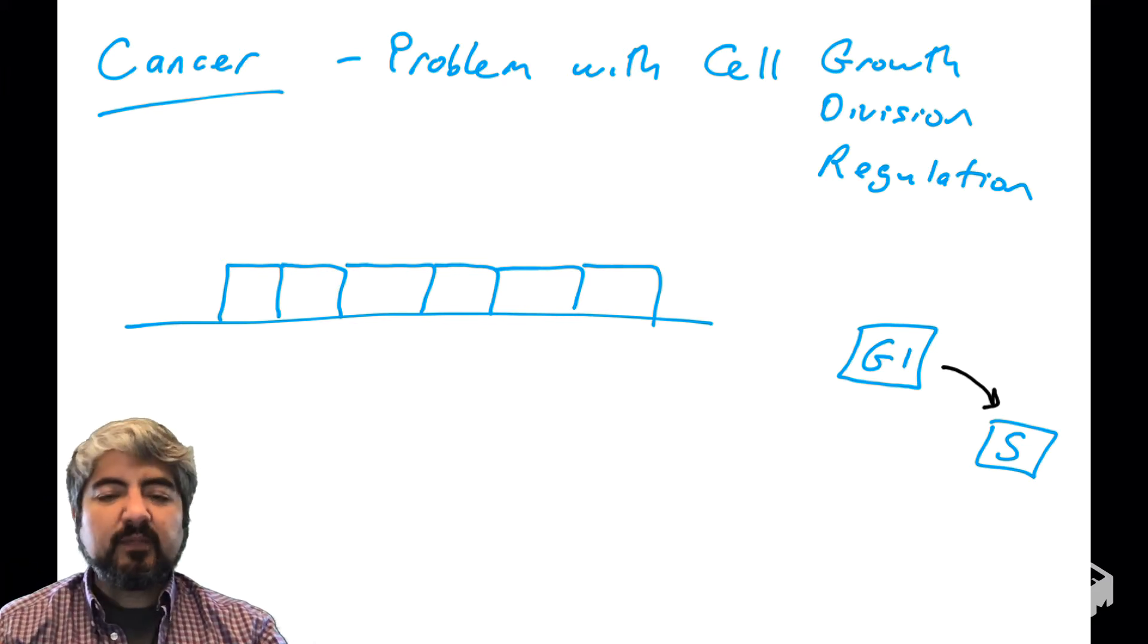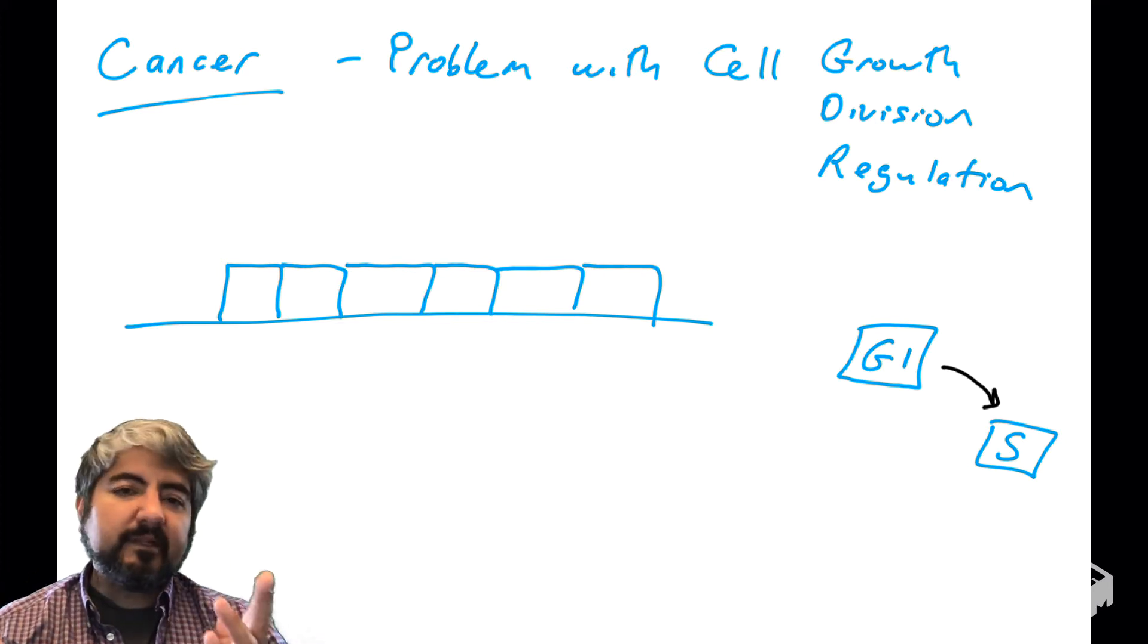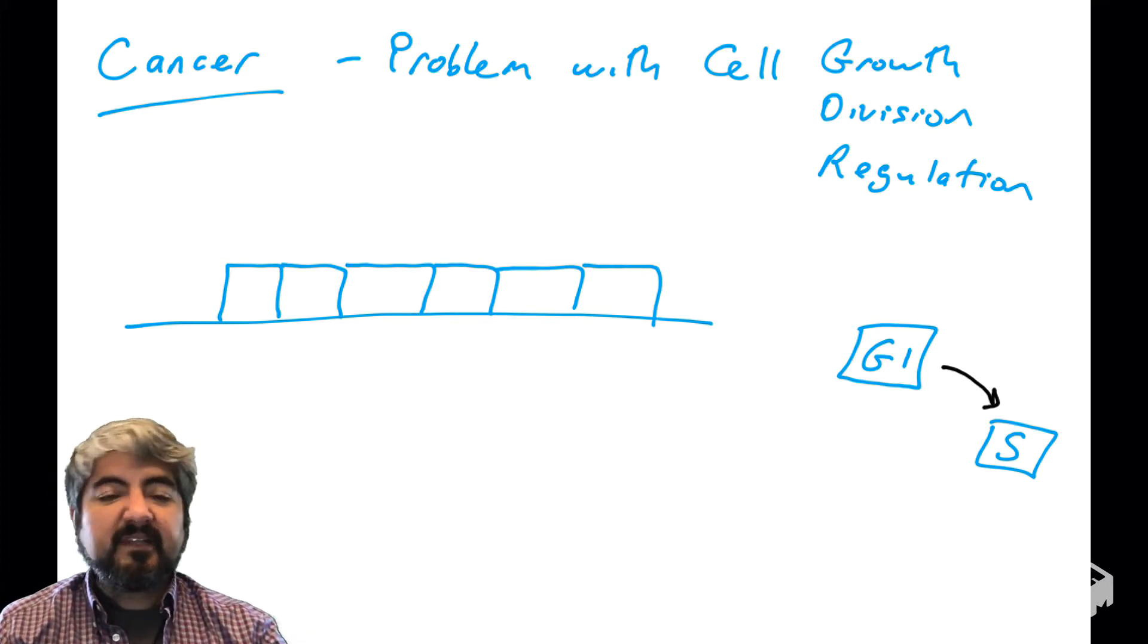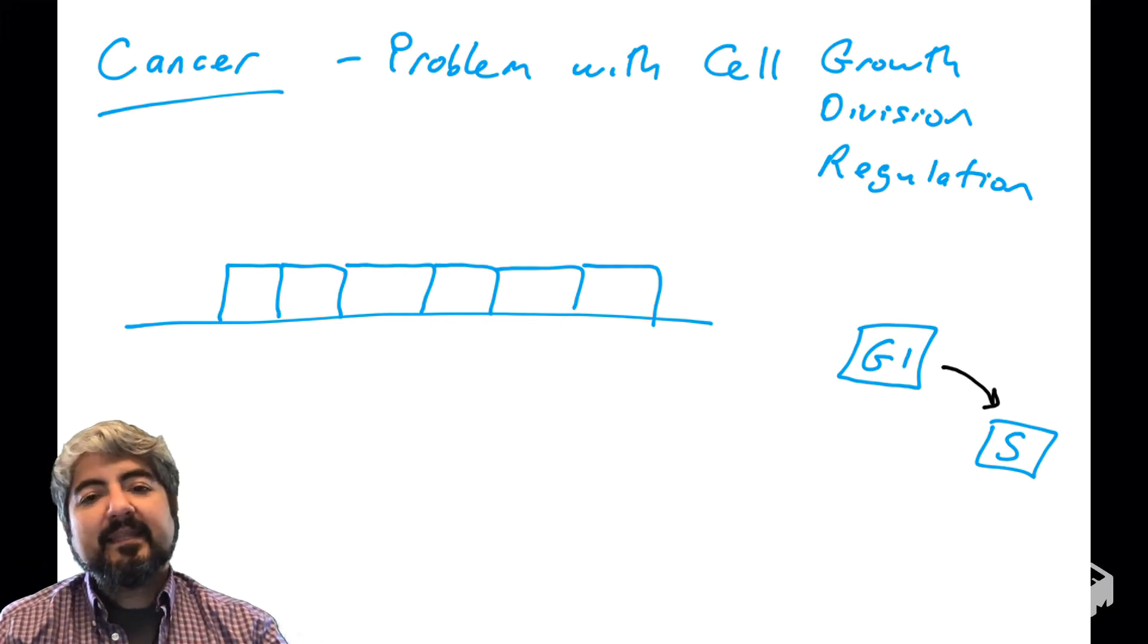So what are the phases of the cell cycle? We have G1 or the gap phase or the growth one phase. And that's when cells are typically sitting there doing their function. They're functioning as a kidney cell or a liver cell or a muscle cell.